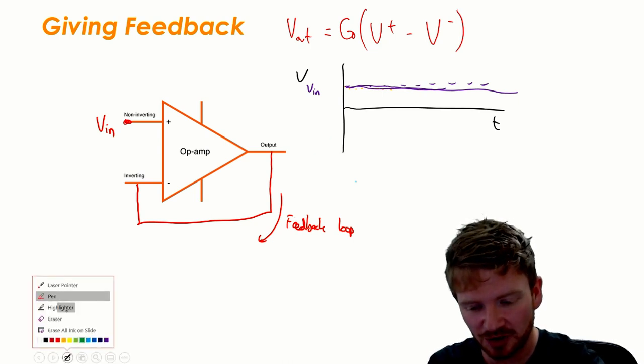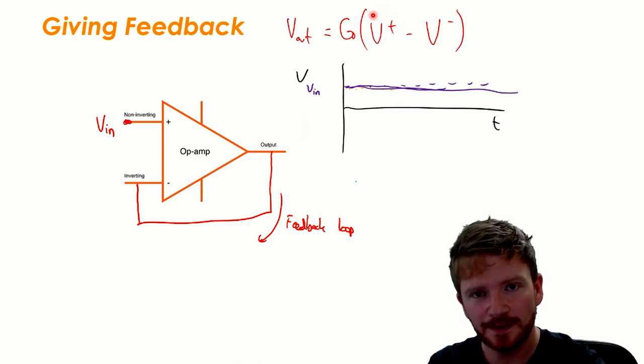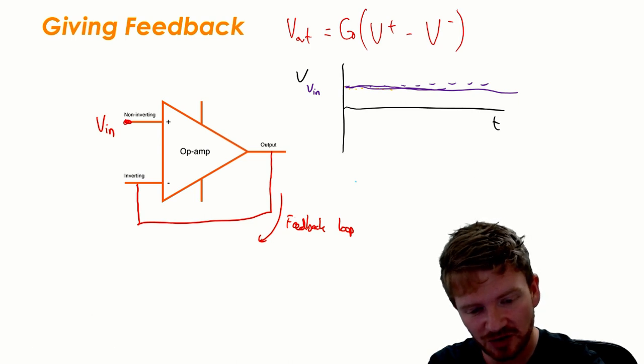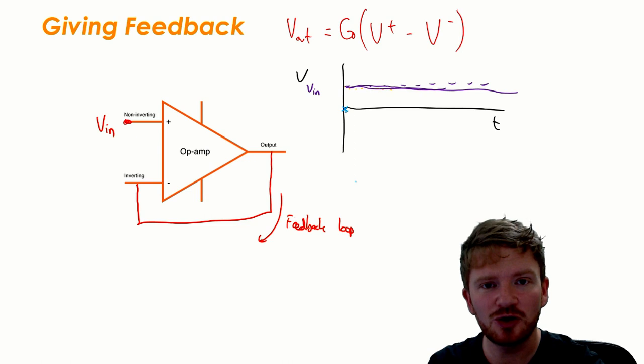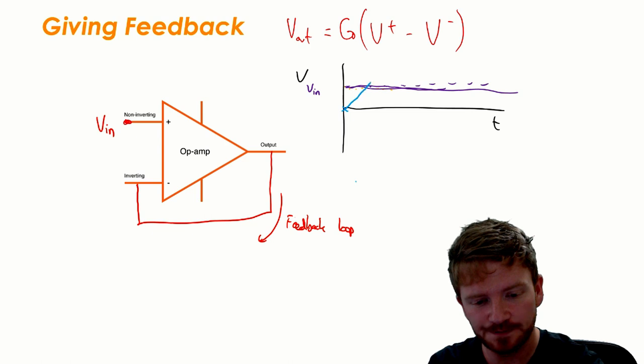So V non-inverting will be some positive number which is my voltage going in. V inverting is my output and I'm assuming that my output starts at zero. So V out will start here but because this term is positive it will start to climb and it will rise.